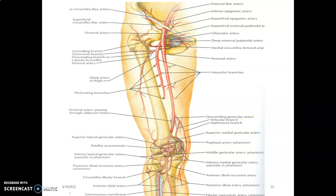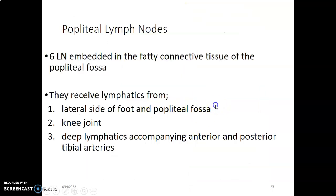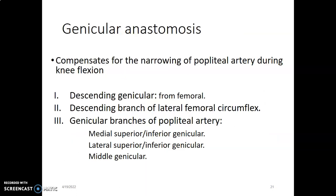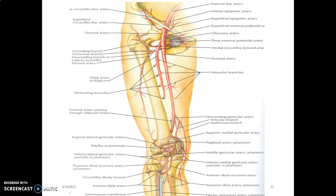We stopped at genicular anastomosis, where we said it is formed by five branches of the popliteal artery: the superior medial, inferior medial, superior lateral, inferior lateral, and the middle genicular. But we also have some contribution from the descending genicular branch of the femoral artery, the descending branch of the lateral circumflex femoral, and also the anterior tibial recurrent artery.